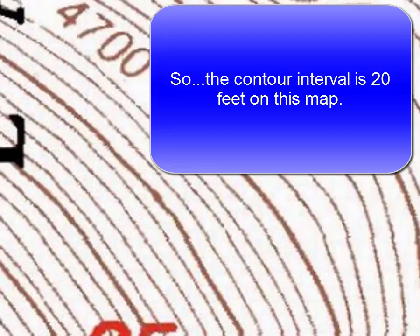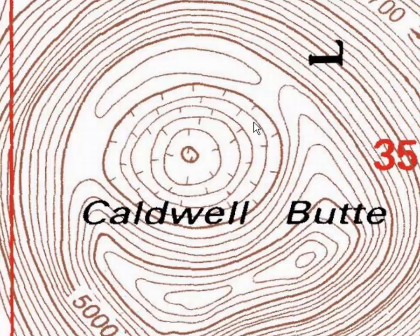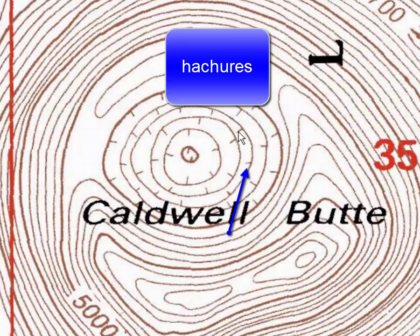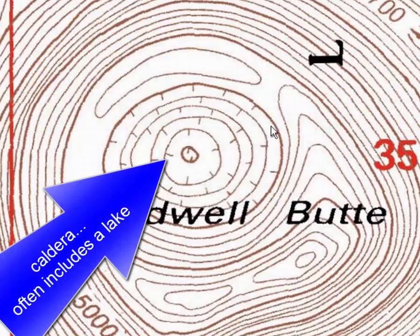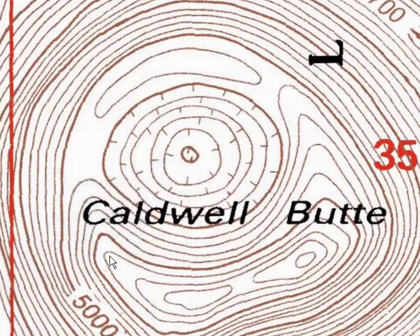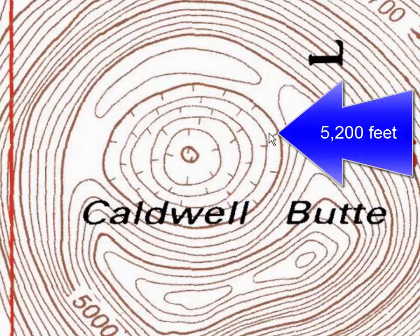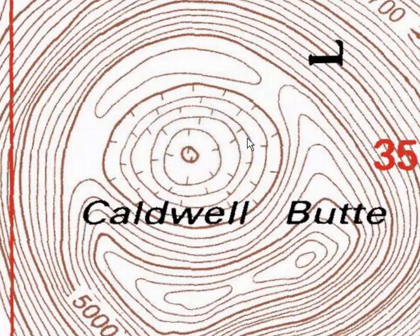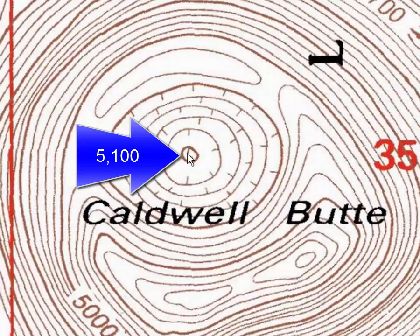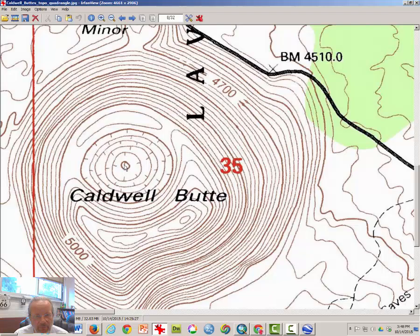Now there are special lines in the very interior, the very center of Caldwell Butte. These hashers — small hash marks that run perpendicular to the major contour line — indicate that the elevation is decreasing, but the contour interval stays the same. So if we look here, this is 5000, 5100, and at the top of Caldwell Butte the very highest contour interval appears to be 5200. Then we would start decreasing contour intervals back down: 5200, 5180, 5160, 5140, 5120, and back to 5100, with some value below 5100 in the very center of the caldera.